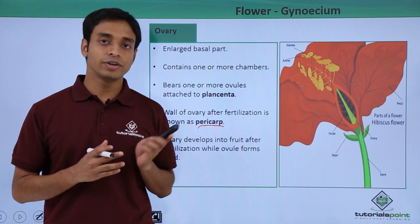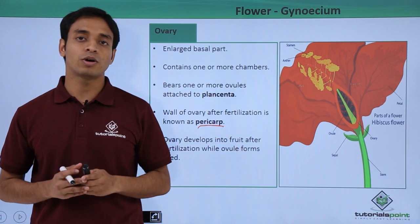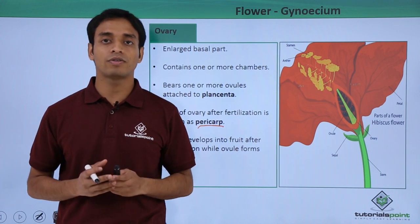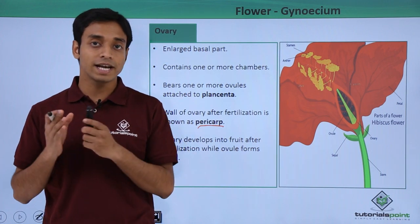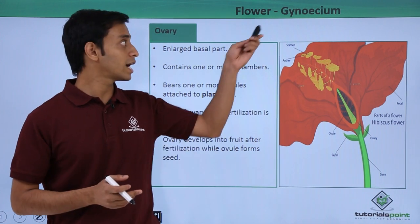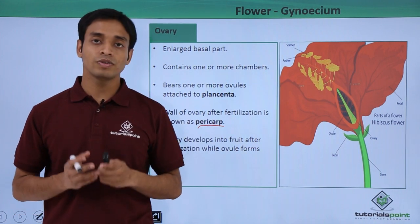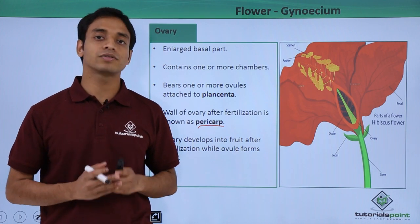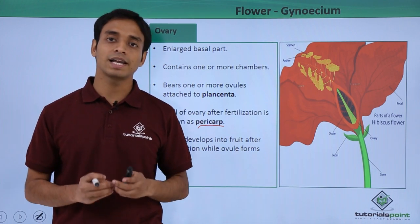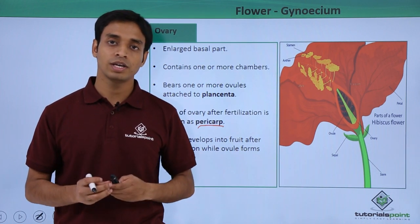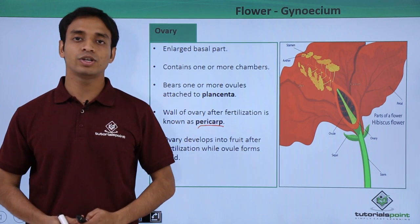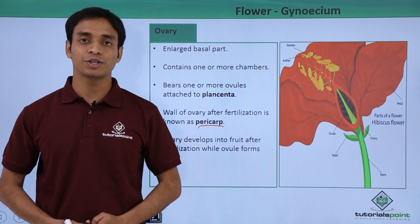In this video we have talked about the second essential part of a flower — the gynoecium — and its three important parts: the stigma, the style, and the ovary. I hope you have understood. Thank you.